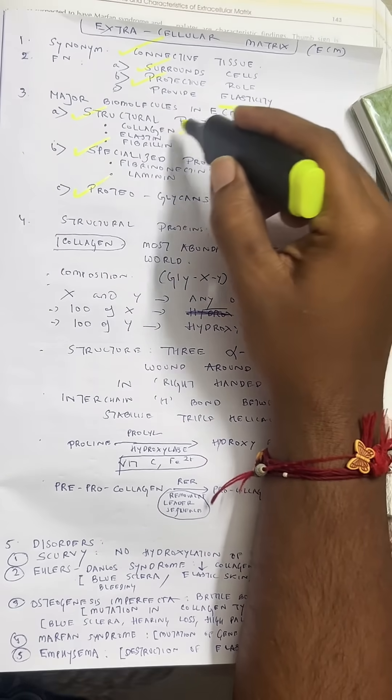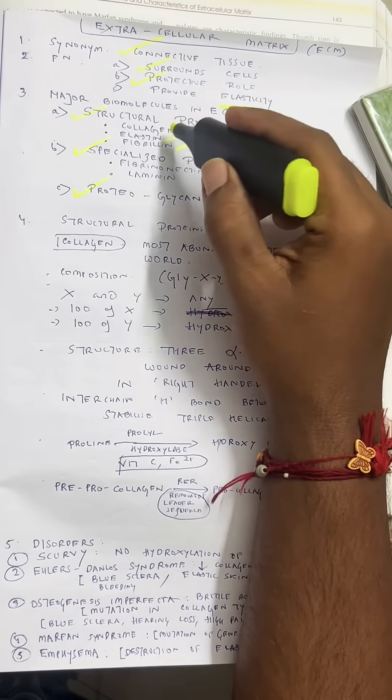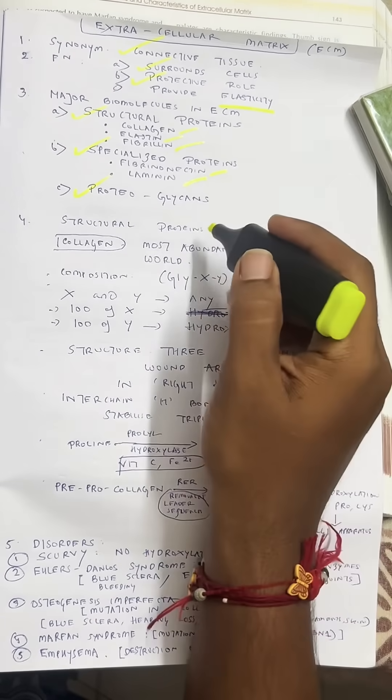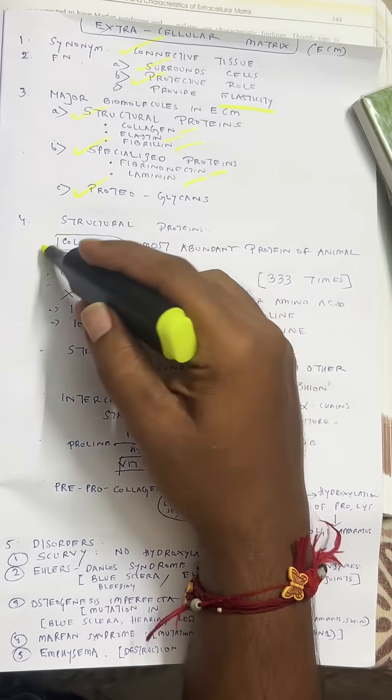Structural proteins are majorly collagen, elastin, and fibrillin. Specialized proteins include fibronectin, elastin, and laminin. For structural proteins, we mainly discuss collagen.